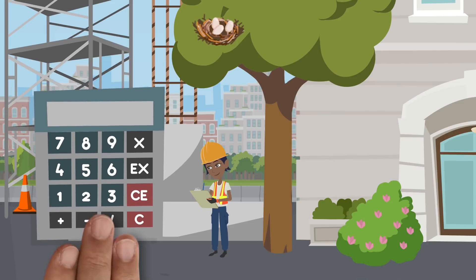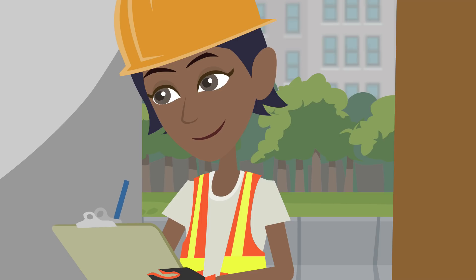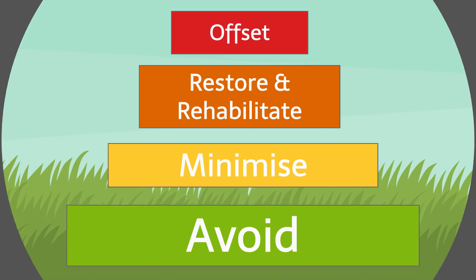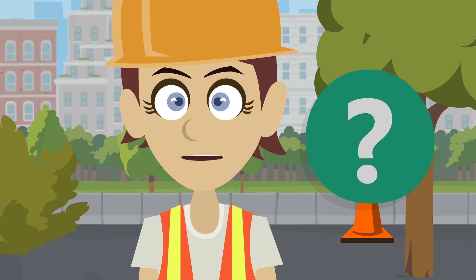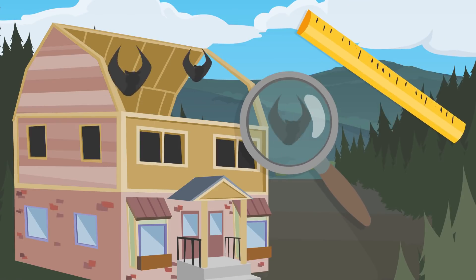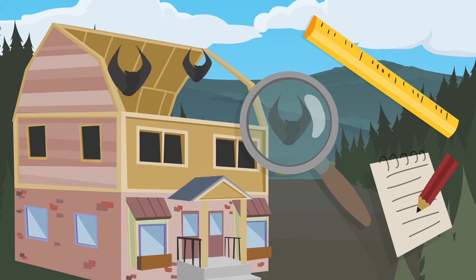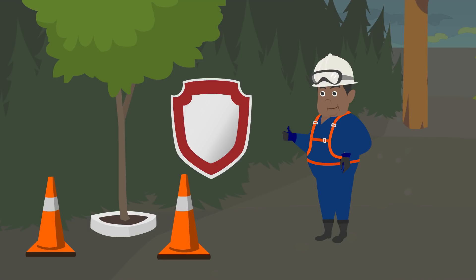On most construction sites, it's likely that most of the impacts to biodiversity will have been worked out once work starts. As part of the site's set-up process, a plan will have been developed taking into account the biodiversity mitigation hierarchy — if you are in doubt on this, ask your construction manager. If impacts on biodiversity have been identified, you might be asked to put in place specific measures to avoid or minimise these impacts.